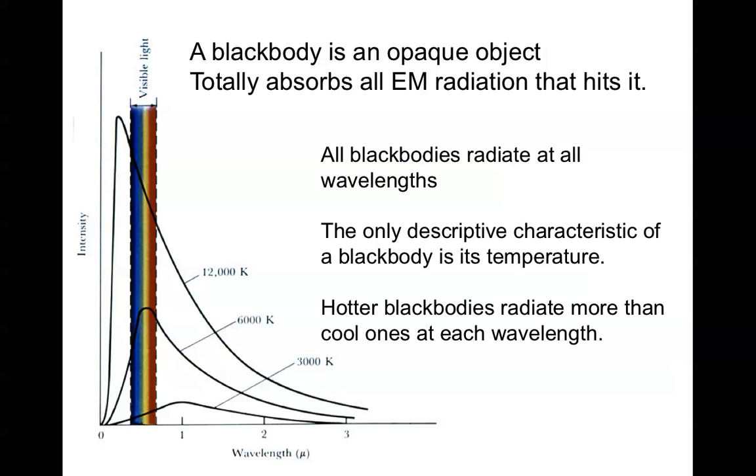The scientific definition of a black body is an opaque object that totally absorbs all electromagnetic radiation that hits it. Bodies that absorb all this radiation also emit radiation based on their temperature.